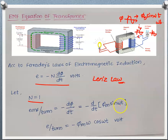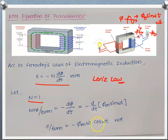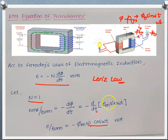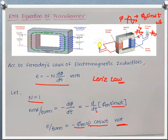Taking the derivative, EMF per turn = −dφ/dt. Since φm is constant, it is taken outside. The derivative of sin(ωt) with respect to t is ω·cos(ωt), and ω is constant. So EMF per turn = −φm · ω · cos(ωt). This is the EMF per turn induced in the transformer.